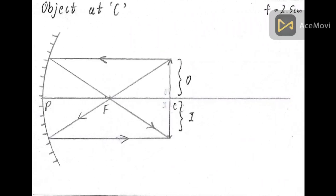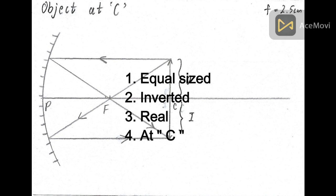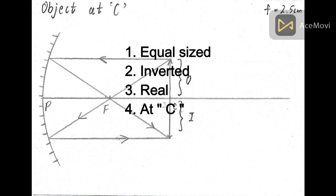When the object is placed on the center of curvature, we get the image on the same place. The image is same size, inverted, and real.